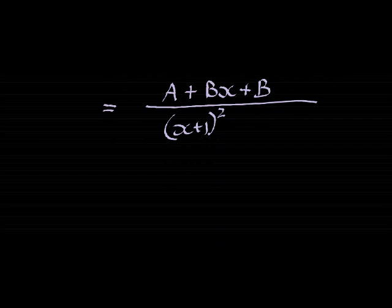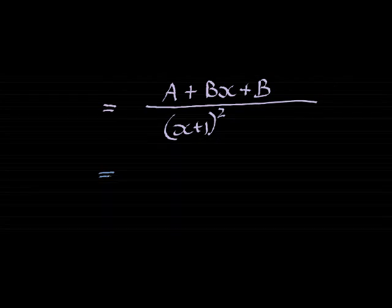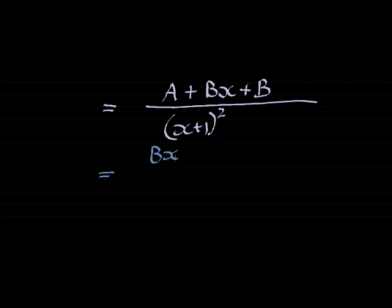Now we group. First step is factorize. Second step is split over factors. The third step is to group. And I see I have a bx, only one term with an x. And I have two terms that don't have any x's: a and b. A plus b. And that's over (x plus 1) squared.